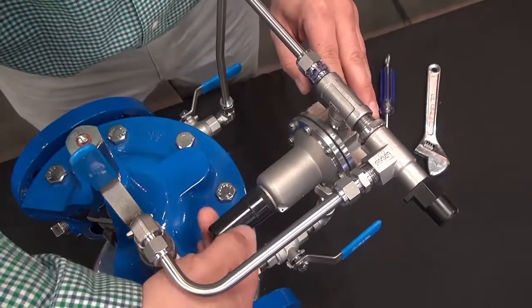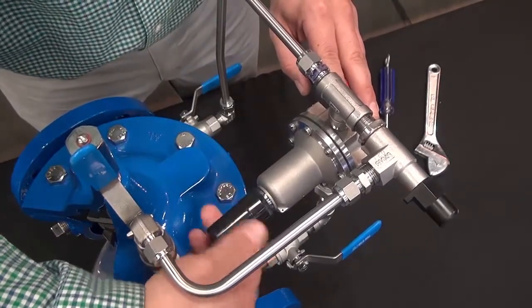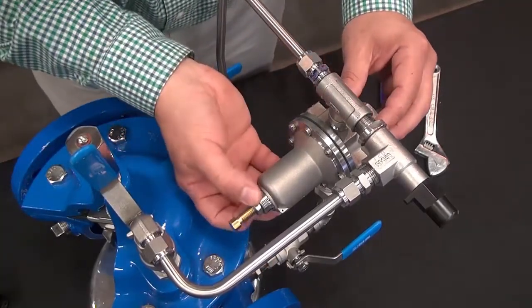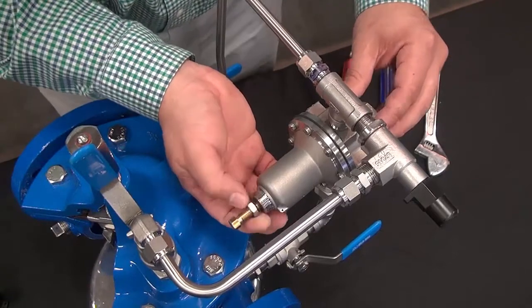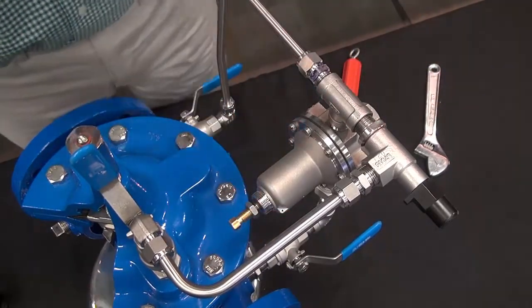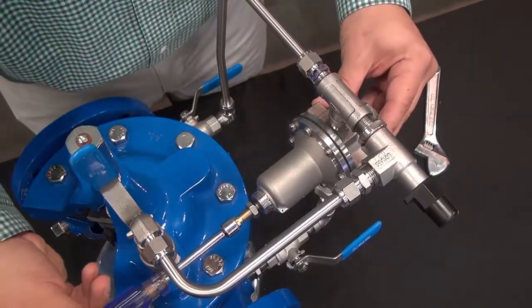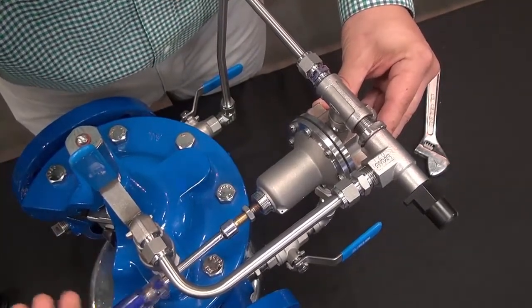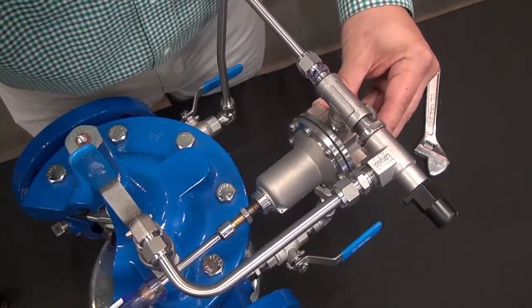We want to get the CRD into the closed position. So in order to get it into the closed position, we will need to loosen the jam nut here and back out on this adjustment screw. Backing out counterclockwise will get us to the lowest setting of the CRD.